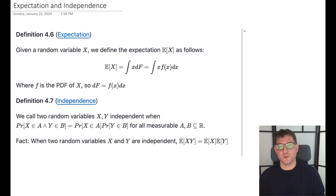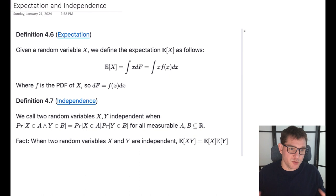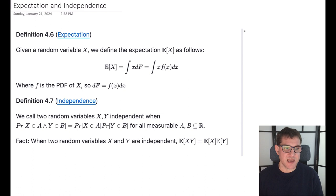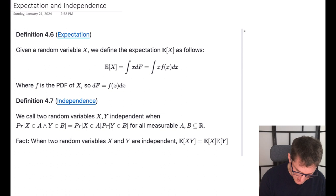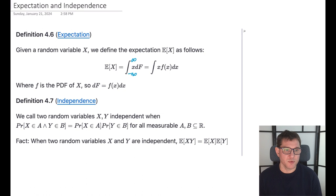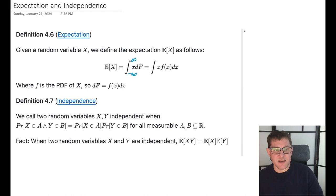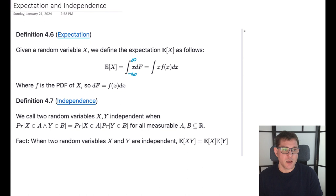One of the most important things we do with random variables is measure their expectation. The expectation of a random variable is a very simple concept — intuitively it's the average value that random variable takes. Mathematically it's defined as the integral of x dF, where F is the CDF of the random variable, integrating from minus infinity to infinity, giving you a scalar value. If the CDF is differentiable, you can also define it as the integral of x times the density function f(x) dx.